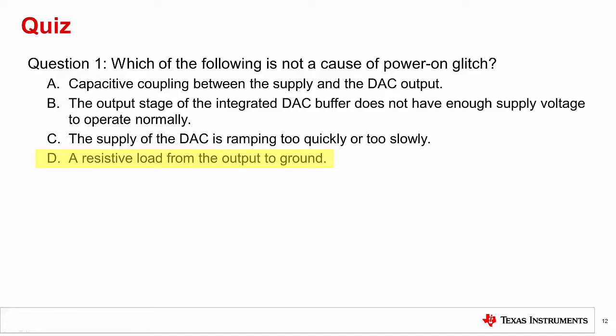D. A resistive load to ground does not contribute to glitch. In fact, it usually attenuates the glitch energy. The resistive path allows current being conducted by the PMOSFET on the output stage to have a path to ground. As well, it discharges the capacitive load coupled to the output.